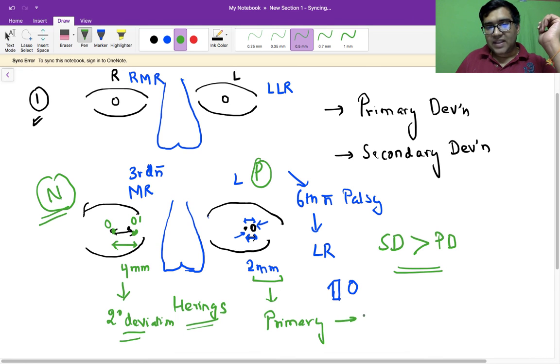deviation in the involved eye and secondary innervation deviation is the amount of deviation in the normal eye. Hope you understood the concept, any doubts you are welcome, thanks a lot.